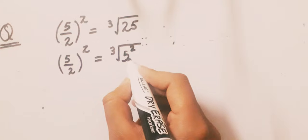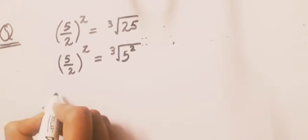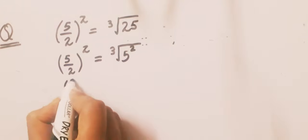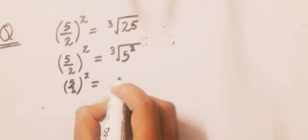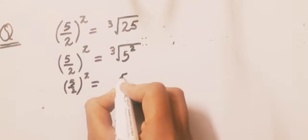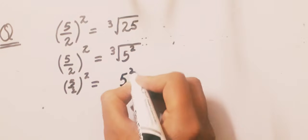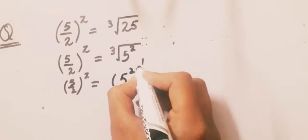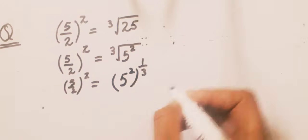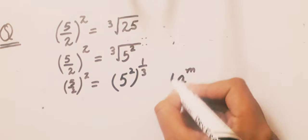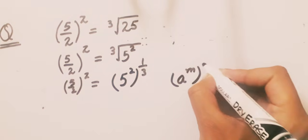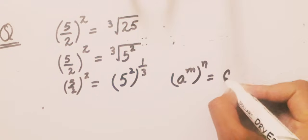Now write the right-hand side in exponential form: (5/2)^z = 5^(2×1/3). Here we apply the law of indices: a^(m×n) becomes a^(mn).